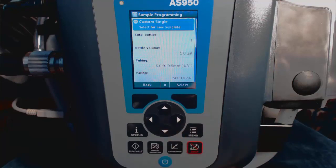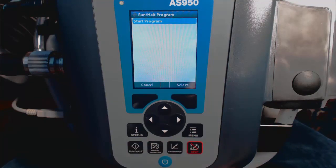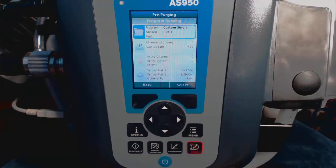That's all the programming there is, and now we can just review all the items, and the last step would be to select the run key, and select run from the menu, and now the sampler will begin its program.